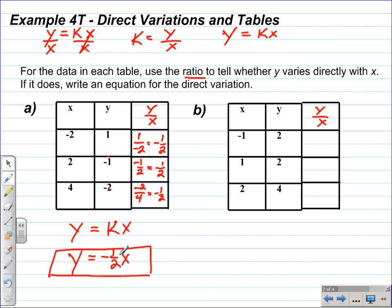This is the solution here, so this is a direct variation. And the reason it's a direct variation is because each of these ratios reduces to negative 1 half.